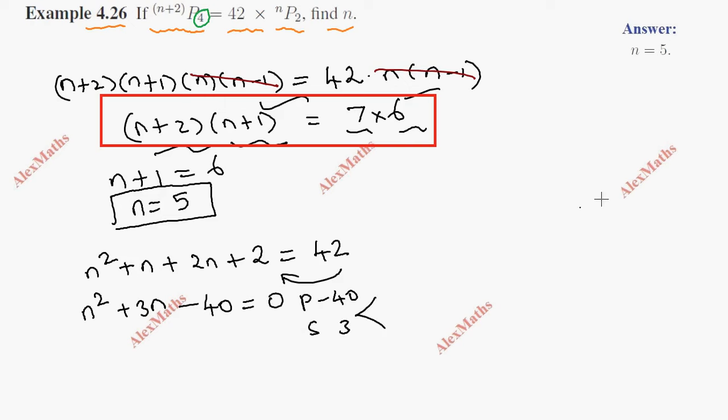8 times 5 is 40. Since the sum is positive 3 and product is negative 40, we use +8 and -5. Splitting the middle term: n² + 8n - 5n - 40 equals 0.